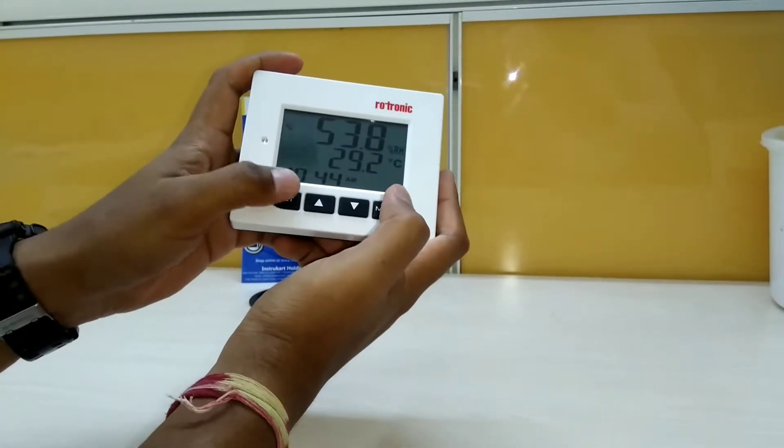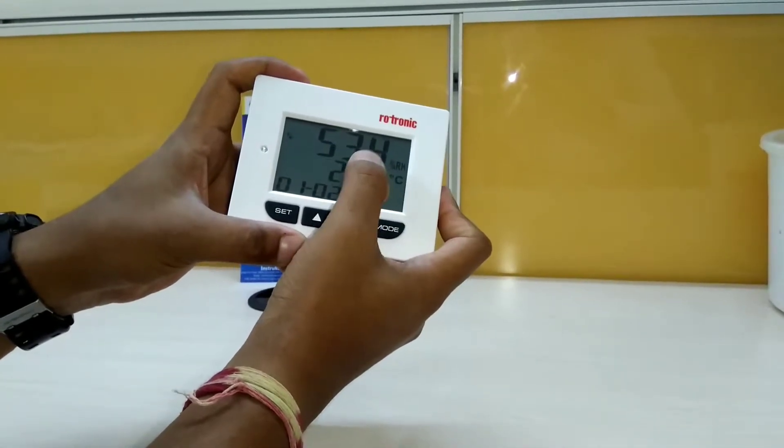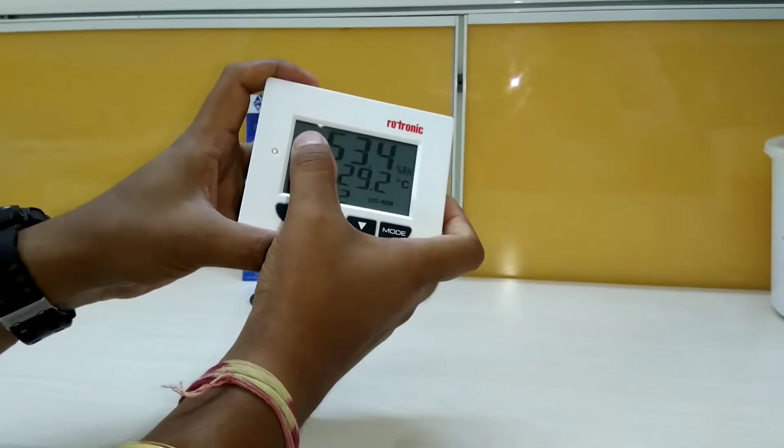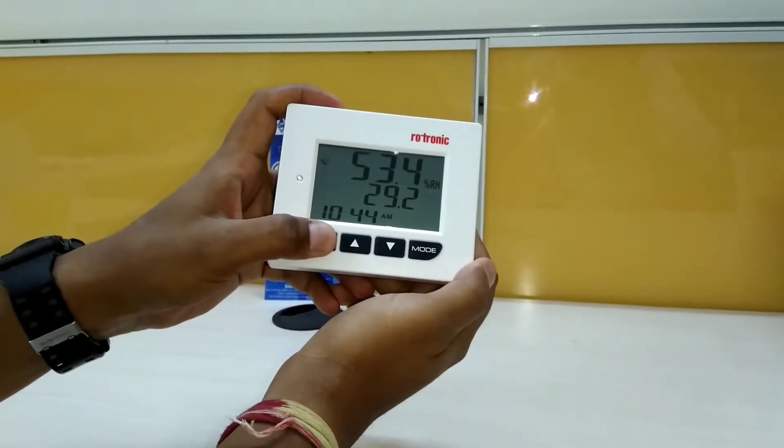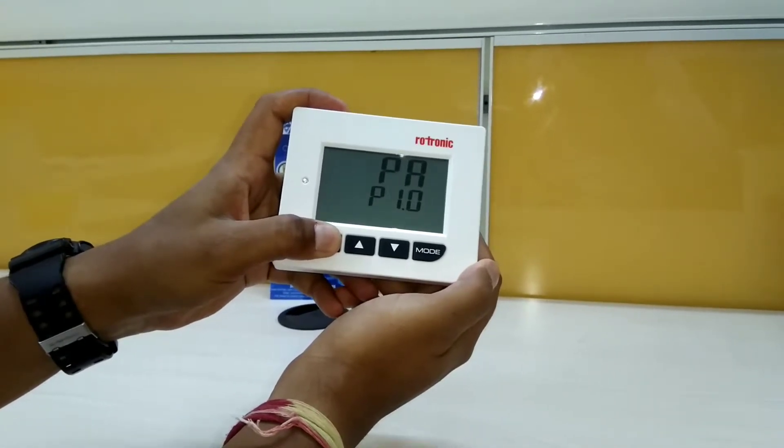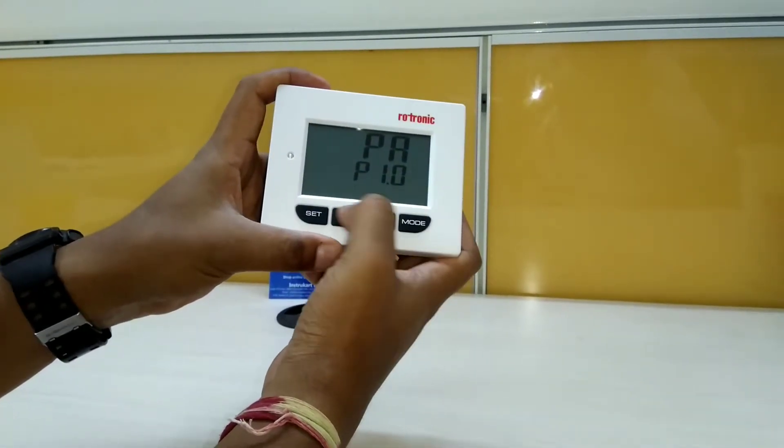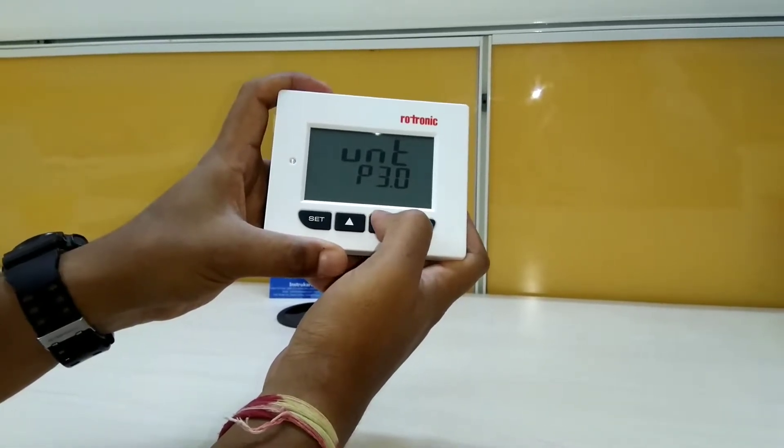We can use the set button to give a set point for high and low where it will give you an audio visual alarm. For this, you have to long press the set key and then use the up and down button to toggle between different modes.